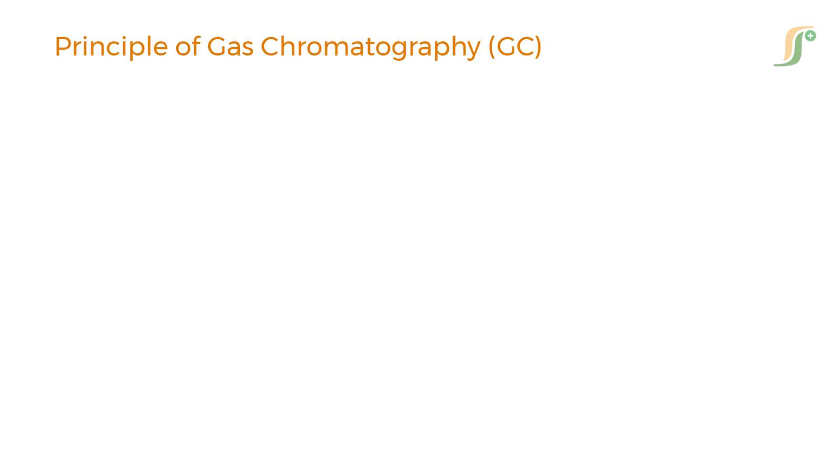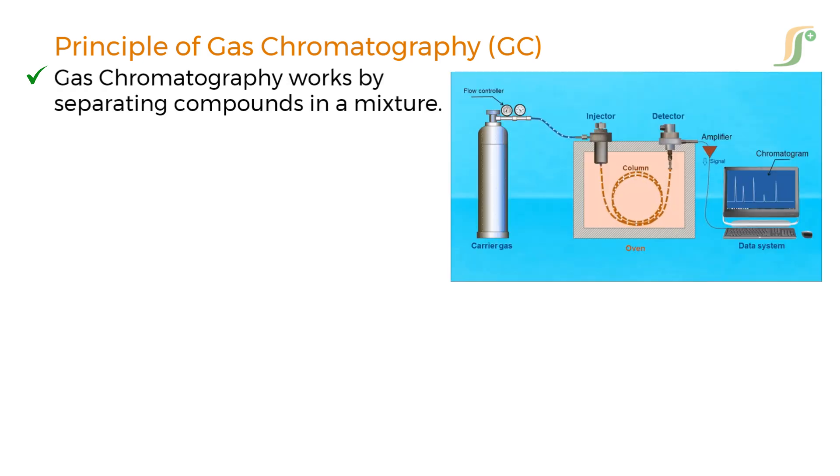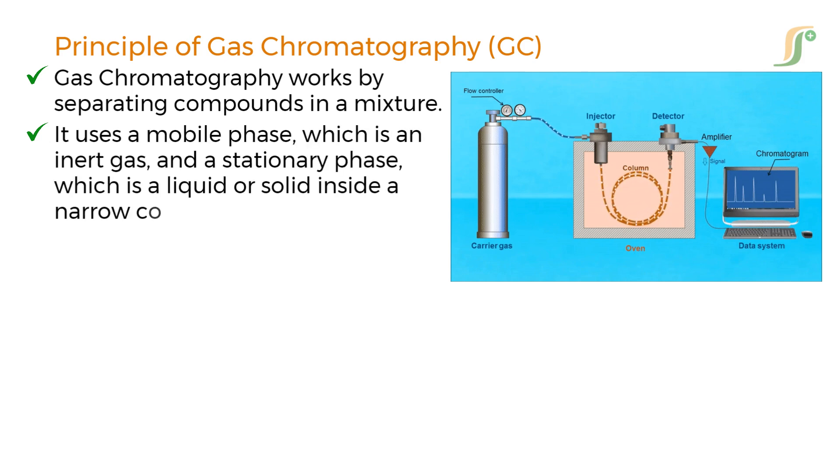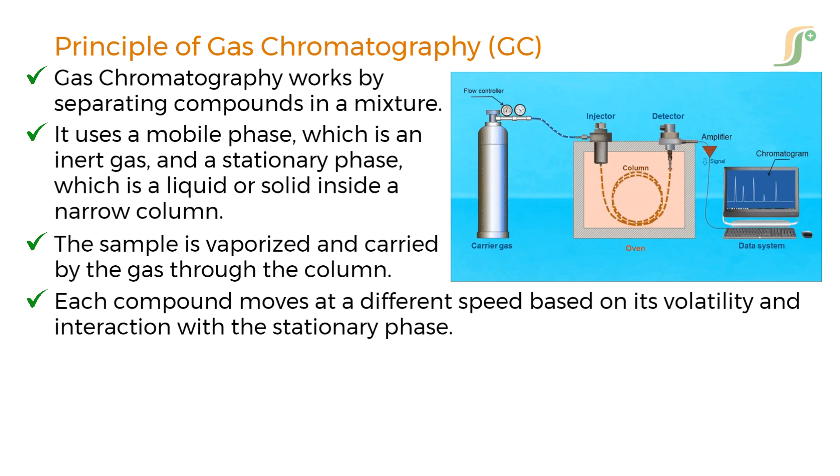Let's now take a deeper dive into the working principle of gas chromatography and trust me, understanding this well is the key to mastering GC. Gas chromatography works by separating compounds in a mixture. It uses a mobile phase which is an inert gas and a stationary phase which is a liquid or solid inside a narrow column. The sample is vaporized and carried by the gas through the column. Each compound moves at a different speed based on its volatility and interaction with the stationary phase. This allows the individual components to be separated and analyzed.